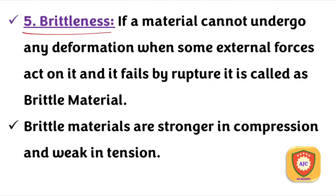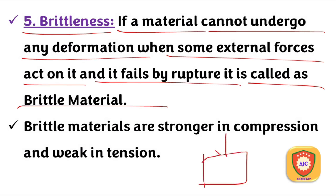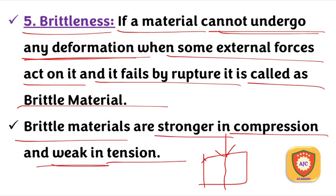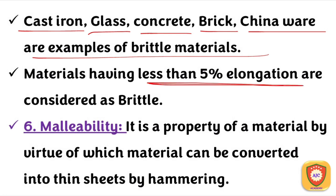Brittleness is the property of a material that cannot undergo any deformation when external force acts on it — it fails by rupture. Examples include cast iron, glass, concrete, and chinaware. If the elongation property is less than 5%, the material is considered brittle.